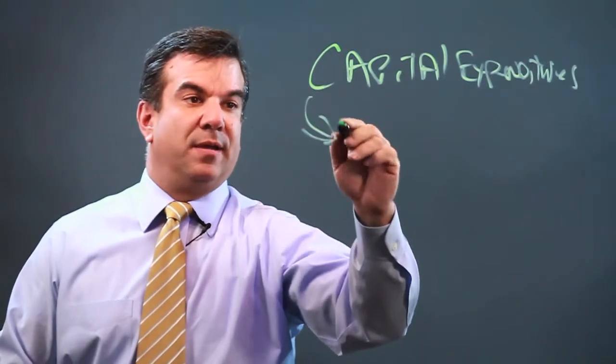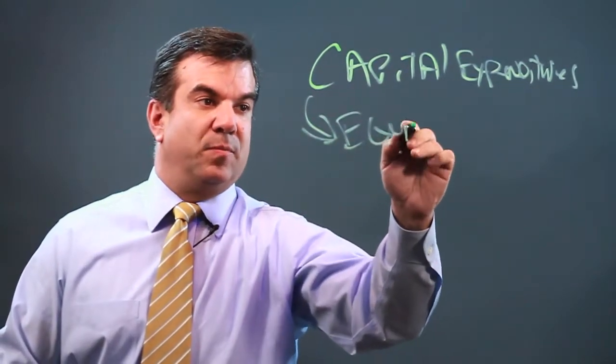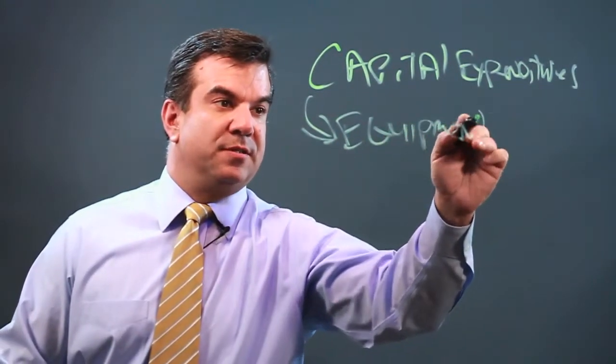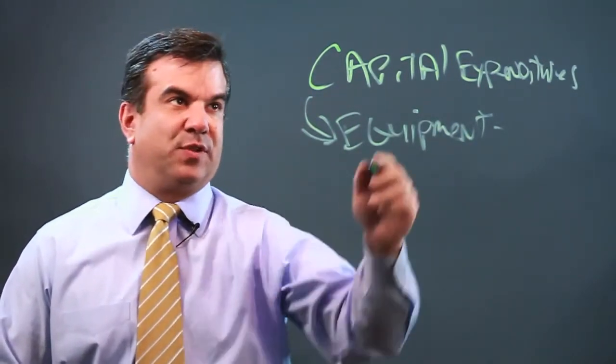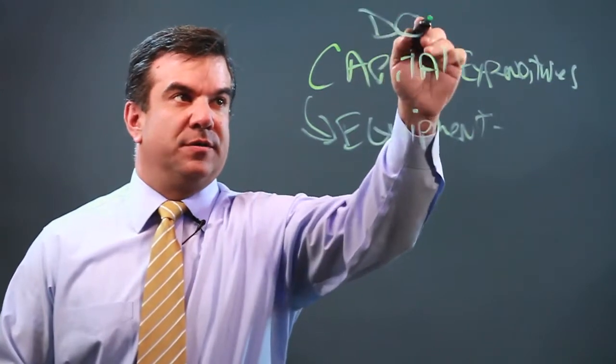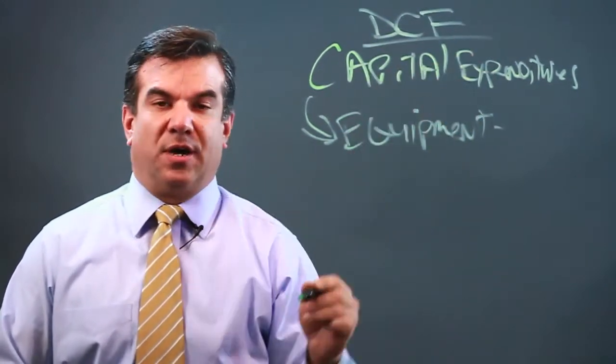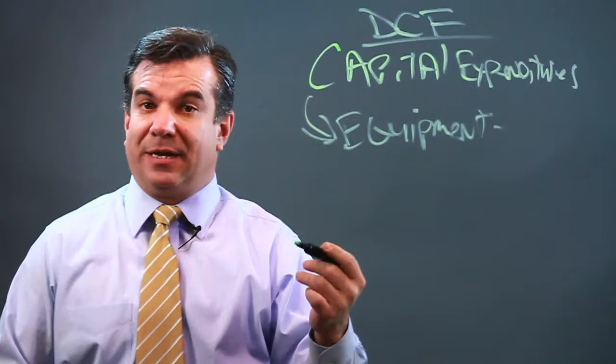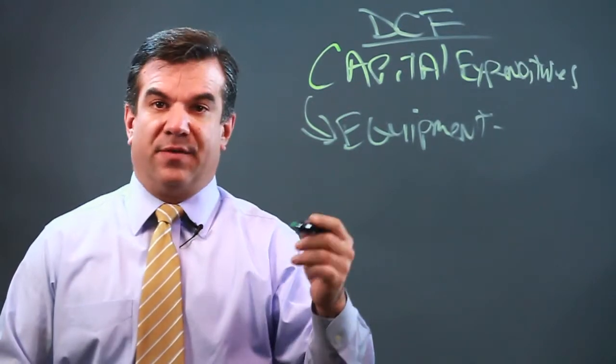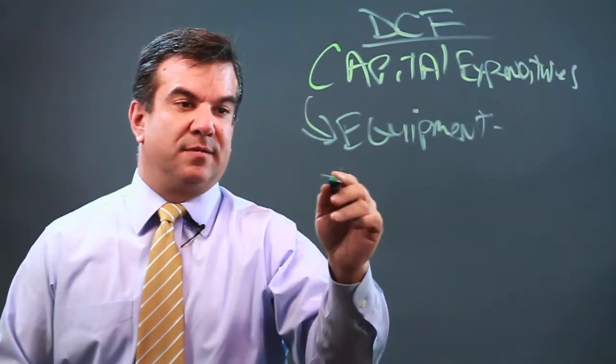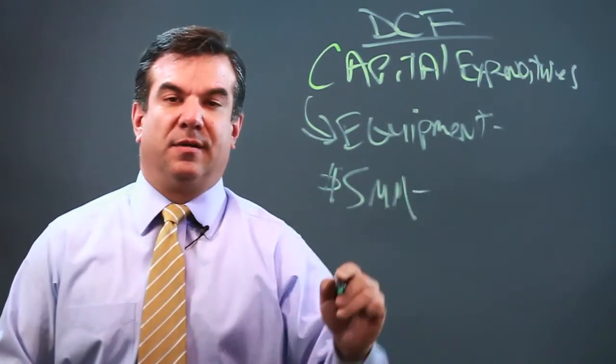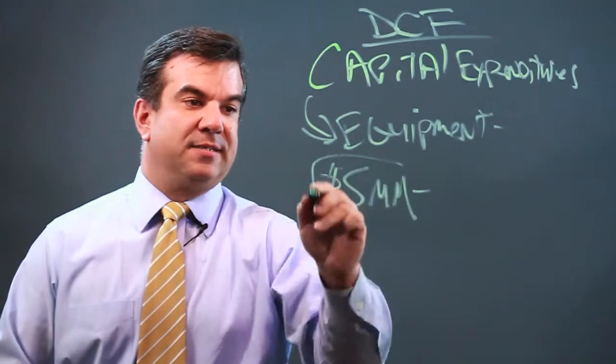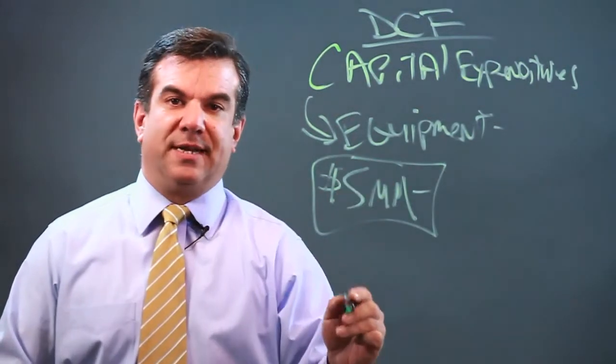Equipment would be one of the capital expenditures that need to be taken into consideration in a discounted cash flow analysis, or DCF. So if you have a company, let's say, that made clothing and every year they need to spend five million dollars in equipment, then that is the capital expenditure that needs